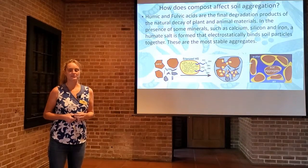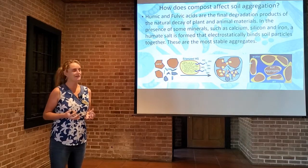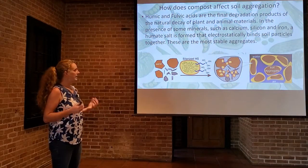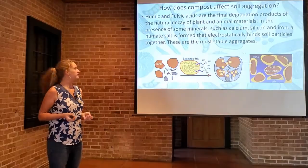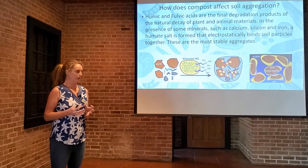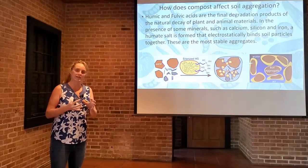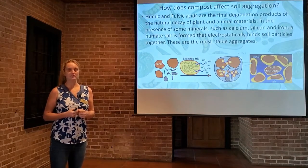Humic and fulvic acids are another byproduct of this process. As natural products break down, they are produced from the decay of plant and animal materials. In the presence of some minerals, including iron, silica, and calcium, a humate salt is formed. That's actually electrostatically binding soil particles together, almost like a magnet would work. These are the most stable aggregates — they tend to stay together for a very long time because of those bonds.